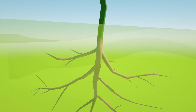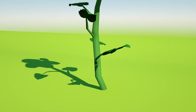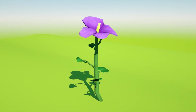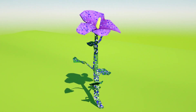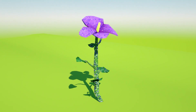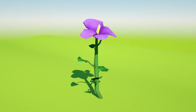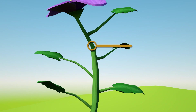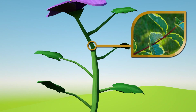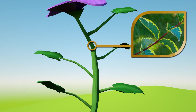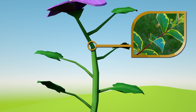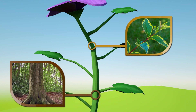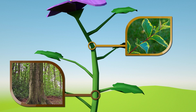The stem holds up the plant. It also brings water and food from the roots to the rest of the plant. Green stems carry nutrients during photosynthesis, and plant stems can grow into branches. Green stems are soft and flexible, while woody stems are hard and rigid — they are called trunks. Trees have trunks.